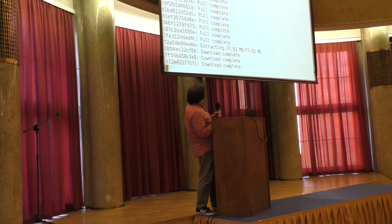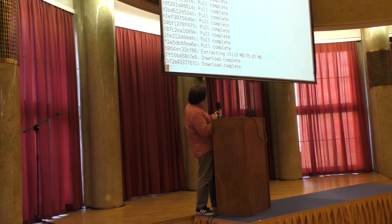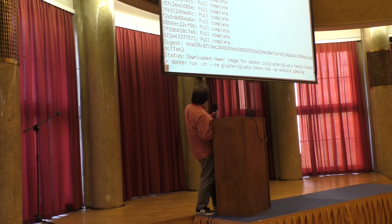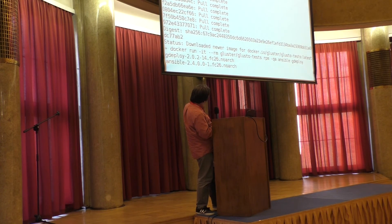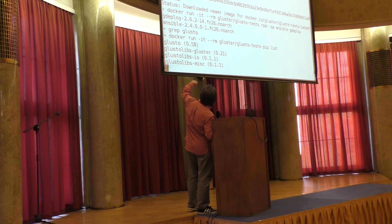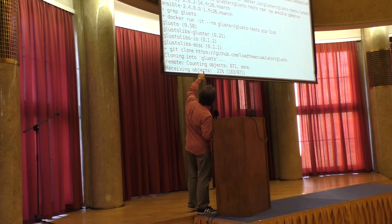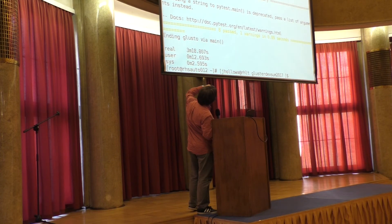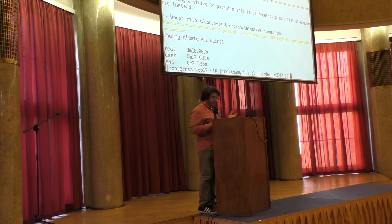It's still working — this install is actually the second longest step, and I was on a slower link for this recording so it will go much faster for you. Now I'm running against the Docker image just to show you the versions of Ansible and gdeploy that are installed, as well as the glusto-libs, gluster, io, and miscellaneous packages. Then I'm doing a git pull on the gluster glusto-tests container and running a test. That was five minutes — by this clock, three minutes from start to finish.